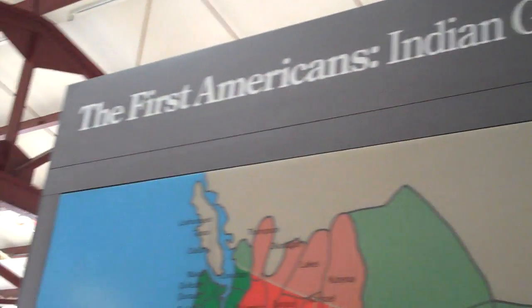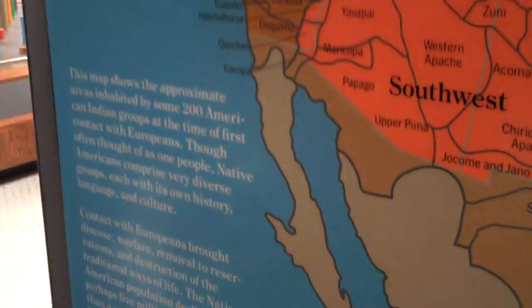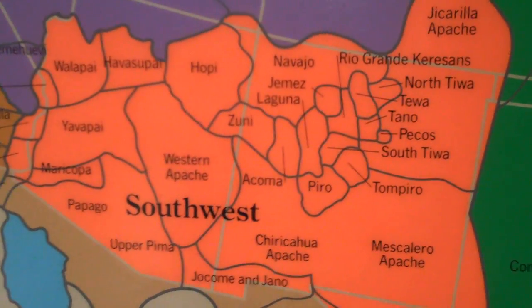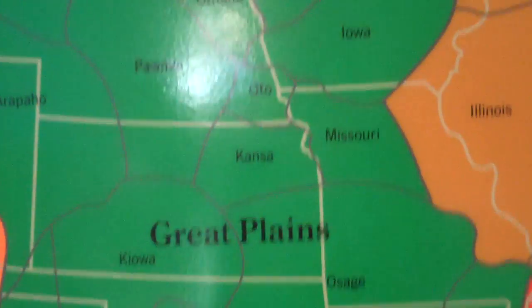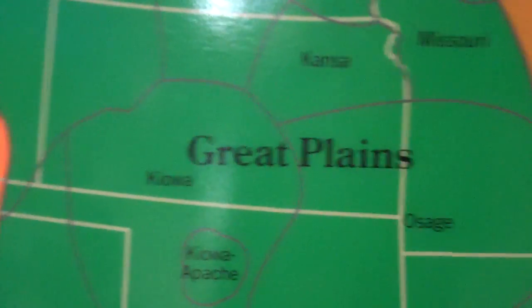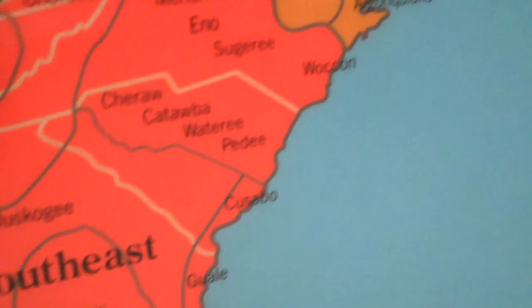This map shows the first American Indian groups — the approximate areas inhabited by some 200 American Indian groups at the time of first contact with Europeans. You can see that we're going closer to the area. There are all kinds of different Indian tribes, from the Dakota to the Southeast and the States.